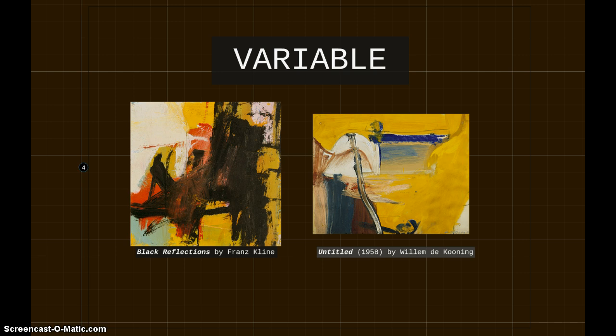Franz Kline's Black Reflections is similar in its perceivable variable features. Yellows, whites, blues, and browns dominate the canvas, but again these colors have no influence on the category that this work belongs to. There are no discernible shapes recognized by the viewer. Texture can also be seen as a variable feature in this work — the paint is applied evenly in most places throughout the canvas, with small areas of actual texture created by the paint, yet this has no bearing on the fact that this piece belongs in the category of abstract expressionism.